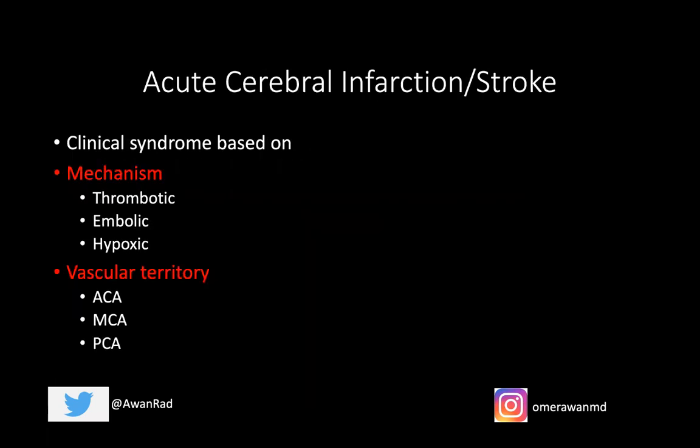Today we're going to talk about stroke or acute cerebral infarction. First, I want to make sure everyone understands the difference between an acute ischemic stroke and a TIA, or transient ischemic attack. A TIA is a very brief focal neurological deficit that's reversible — that's the key. It usually lasts 15 to 20 minutes, certainly not usually more than an hour, and may be related to ischemia or emboli. It can present with amaurosis fugax, where there's transient visual loss, but then you recover.